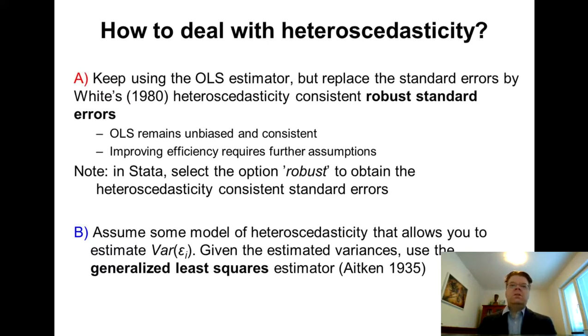Now, the second alternative, this alternative route B, which I will consider later, is that if we can actually model heteroscedasticity, then we can have a more efficient estimator. This refers to the so-called generalized least squares approach where Aitken's 1935 work generalizes the Gauss-Markov theorem to the heteroscedastic case. Let's start briefly with option A.